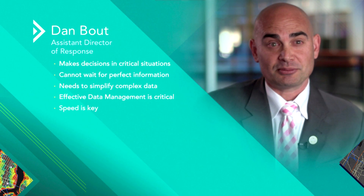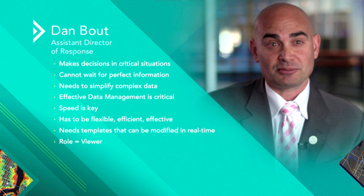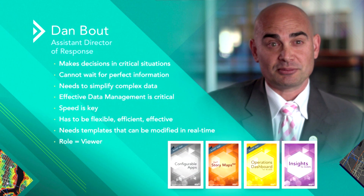Let's talk about some of the personas we saw. Dan makes decisions in critical situations — he can't wait for perfect information, and effective data management is critical to what he does. His solutions need to be flexible, and his role is that of a viewer. He's not going to be editing things or doing spatial analysis, but he needs to simply view data to make better decisions. There are several different apps in the ArcGIS collection that he could be using — represented in a trading card deck where each card describes an app, a really easy way to discuss and learn about our apps.